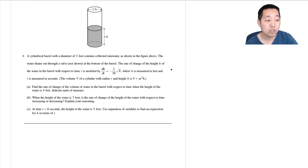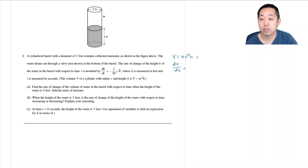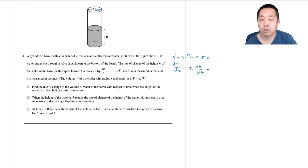So V equals π r² h, and dV/dt — well, r is constant and r equals one because the radius is one. So this simplifies to π h, meaning dV/dt equals π · dh/dt. We want the rate of change of the volume of water, and dh/dt is given as negative one over ten times the square root of h.